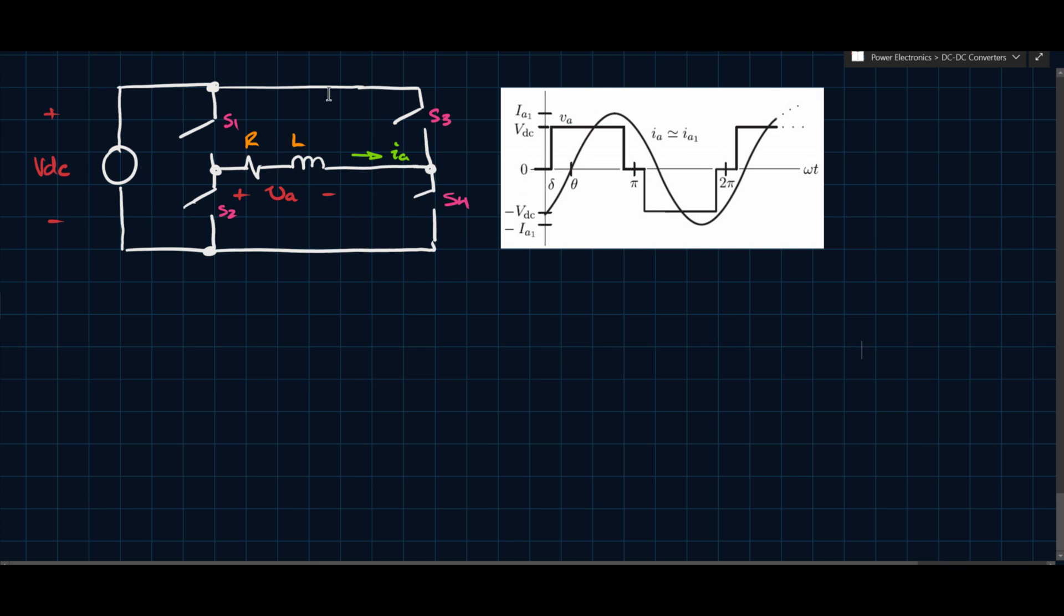You see that VA is a three-level waveform, so this is a tri-state operation. If you're not familiar with what that is, I'll link the video to the bridge converter where we showed how you can actually generate a waveform like this three-level case with this type of converter.